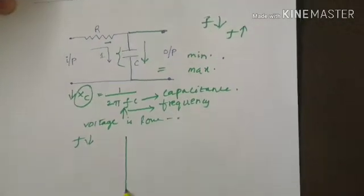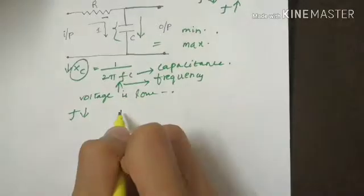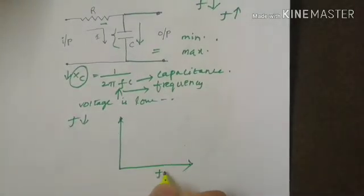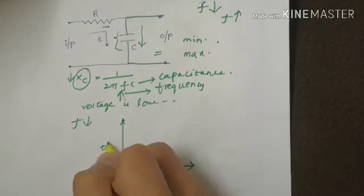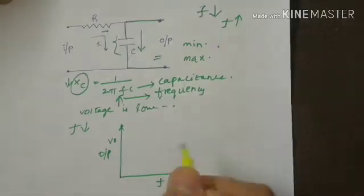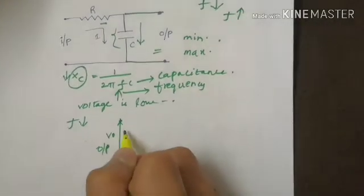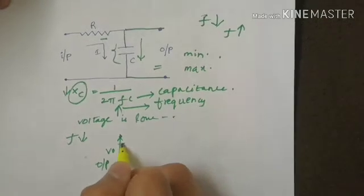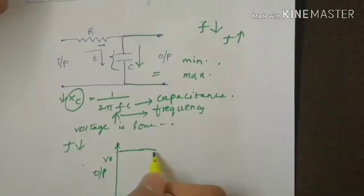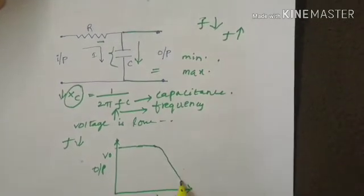So when we draw a graph between frequency of input signal and output voltage, for low frequencies we can find maximum voltage and it decreases with increase in the frequency.